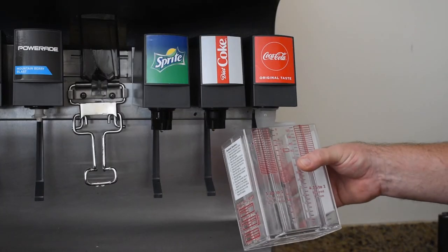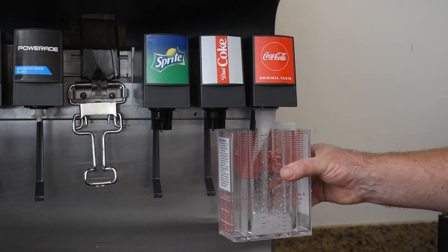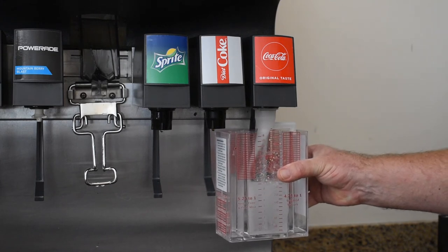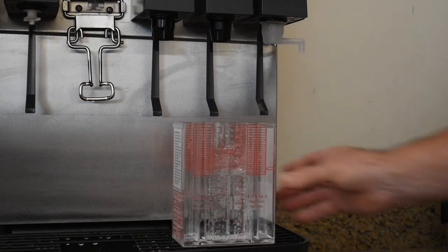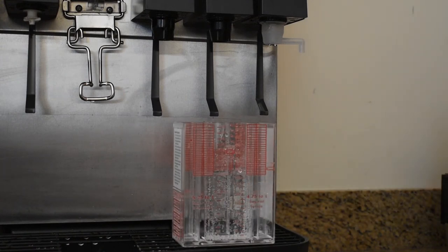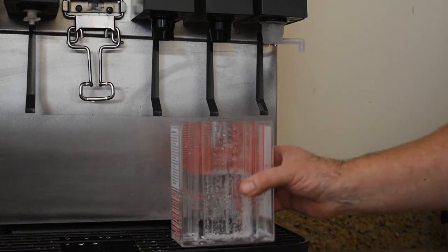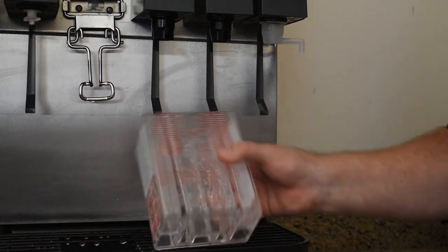Now check the water flow rate. The flow rate should be 10 ounces in 4 seconds. If it doesn't meet that target, adjust as necessary.